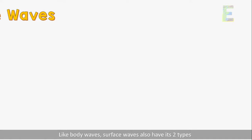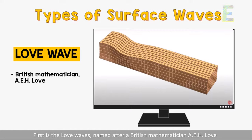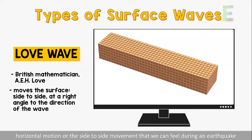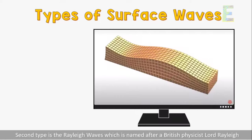Like body waves, surface waves also have two types. First is the Love waves, named after British mathematician A.E.H. Love. These are the fastest surface waves and produce horizontal motion, or the side-to-side movement that we can feel during an earthquake.